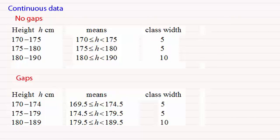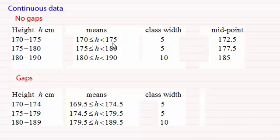You'll be called upon to work out class widths when drawing histograms — remember, frequency density is frequency divided by the class width. Another thing you'll need when working out the mean or standard deviation is the midpoint of your class intervals. To find midpoints, simply add together the lower and upper bounds for the interval and divide by 2. So 170 plus 175 divided by 2 gives us 172.5.